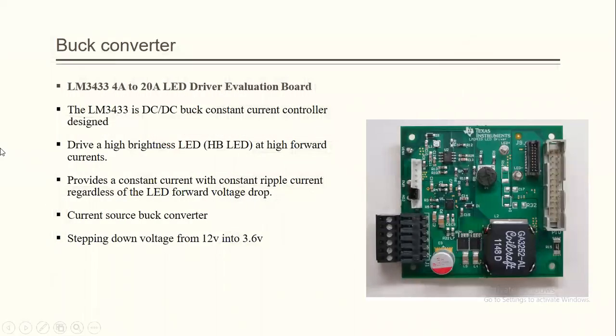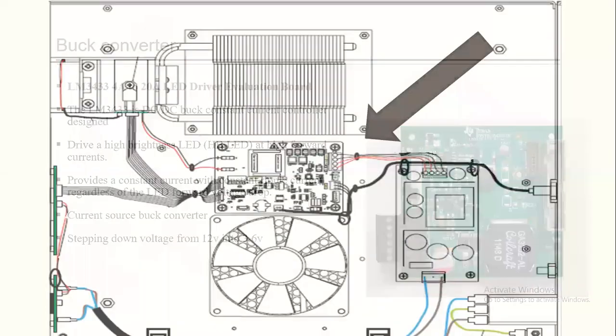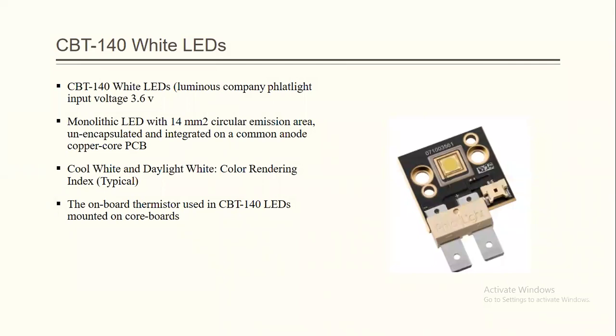So, that's why we go to the buck converter LM3433. It provides an ampere of 4 amperes to 20 amperes. It's from Texas Instruments. It will cost you about 200 bucks. And we can manipulate or we can set the output current, output illumination by two ways: by the potentiometer right here and by the PWM pin right here. It will provide 3.6 volts and of course the LED maximum power is 100 watts.